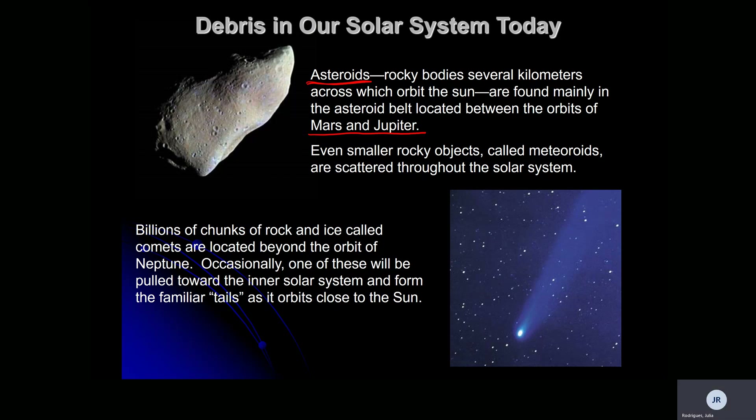Billions of chunks of rocks and comets are located beyond the orbit of Neptune and have a very special name. Occasionally one of these will be pulled toward the inner solar system and form tails as they orbit the sun. That's why when we talk about comets or see them in the sky, they have that tail. You only see Halley's comet about every 57 years or so.